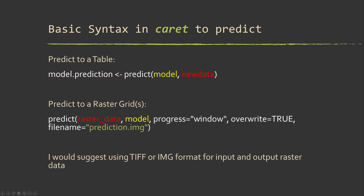Once you've trained a model, you generally predict using the predict() function. You call the trained model object and then the new data you want to predict to — for example, predicting to a new table. The rule is that the table needs to contain all the same predictor variables with the same names, meaning the same column names in the data frame.